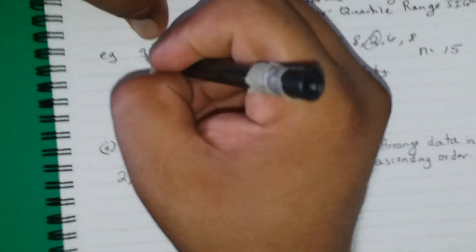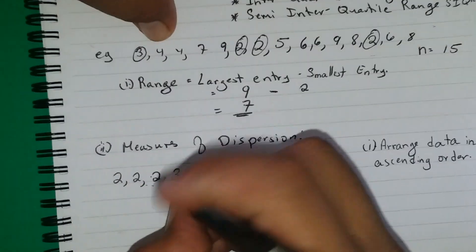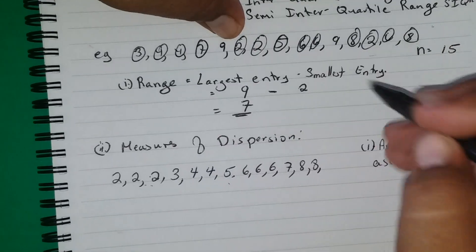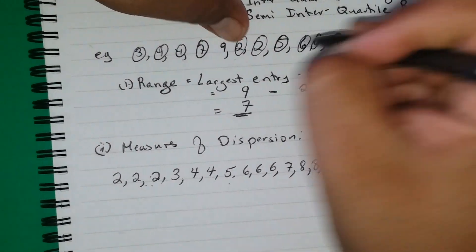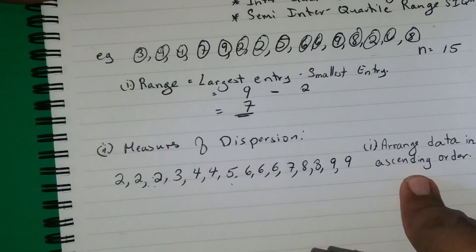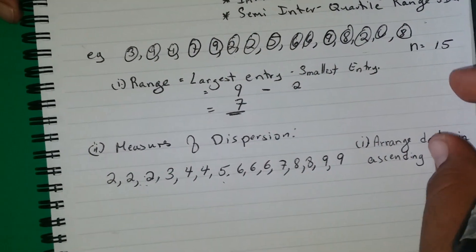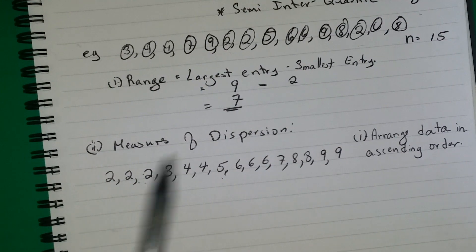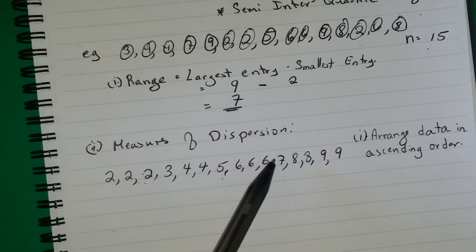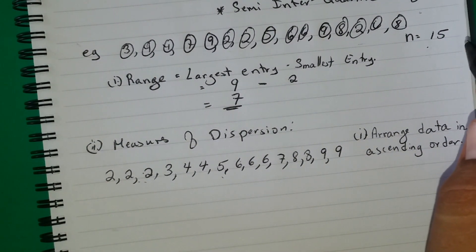Continuing the arrangement: we have one 3, then two 4s giving us 4 and 4. Then we continue adding the remaining values. Once all numbers are circled, they are all included. We can also verify by counting — n is 15, so counting the arranged list should give us 1 through 15. The data is now arranged in ascending order.